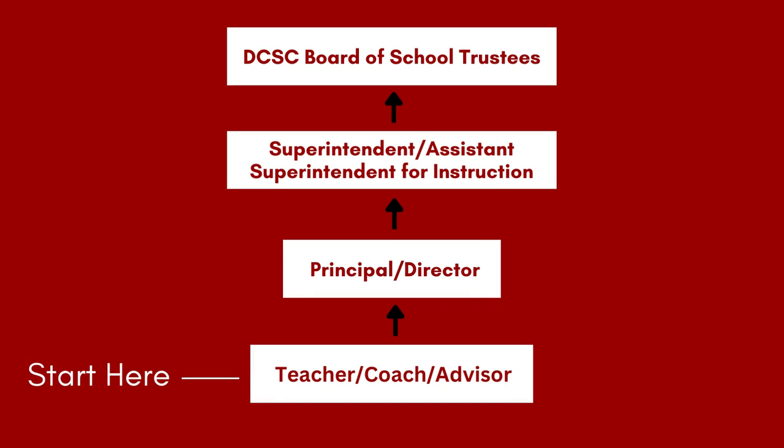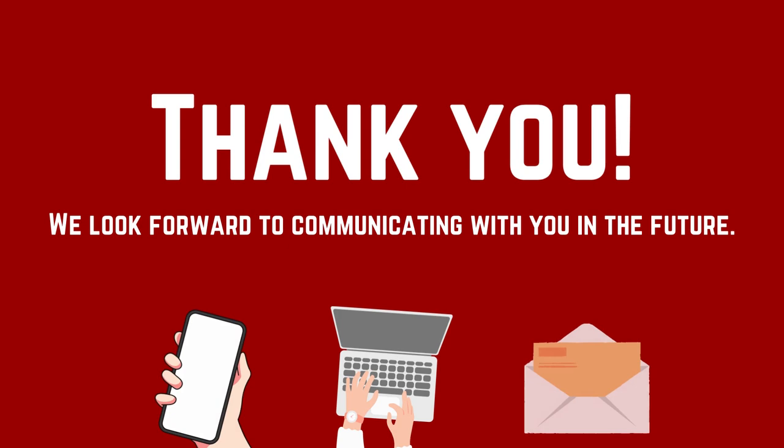Here is our policy on addressing concerns from the public. Starting at the bottom row, we encourage you to start with your teacher, coach, advisor, or whoever is in charge of the class, team, or group that you have a concern about. If it cannot be resolved from there, your next point of contact will be the principal or department head. Then, if the issue is still not satisfactorily resolved, you may bring it to the attention of our superintendent or assistant superintendent for instruction. Finally, if an answer is not found, the concern may be brought to the Board of School Trustees as a whole, where they may decide whether or not a private board session is required to consider the issue. This process is the best way to get your concerns in front of the right people in order to find the right solutions.